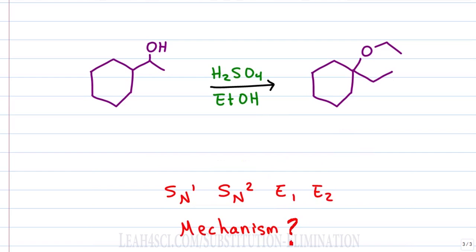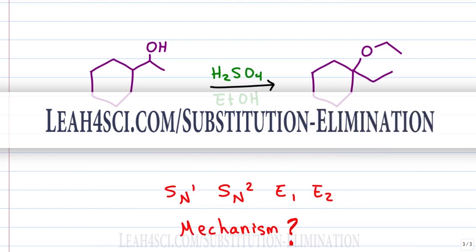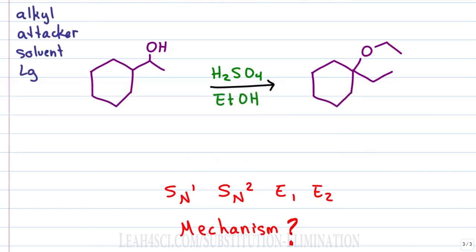The first thing we want to figure out is if this reaction happened as a substitution or elimination. We'll start with a four part checklist. Looking at the four part checklist, we'll start by looking at the alkyl chain, specifically the carbon holding the leaving group. Here I see an alcohol sitting on a secondary carbon. A secondary carbon can both form a carbocation and undergo a direct attack, so it doesn't tell me anything. All reactions can happen: SN1, SN2, E1 or E2.